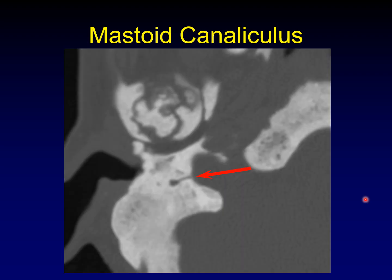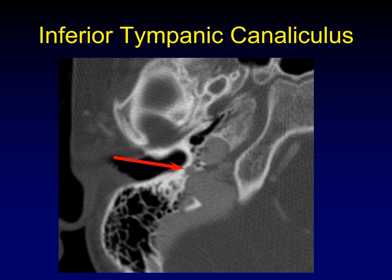Here's another very straight object. This one is running from the jugular bulb out to the mastoid segment of the facial nerve. We're about one centimeter above the stylomastoid foramen in this axial cut. This is the mastoid canaliculus. It carries Arnold's nerve.